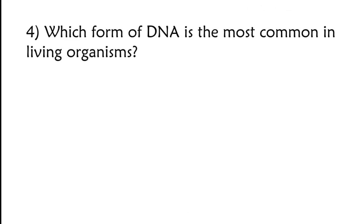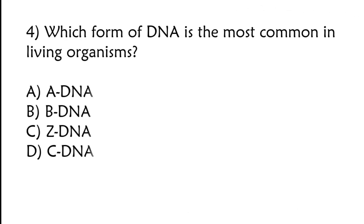Which form of DNA is the most common in living organisms? A-DNA, B-DNA, Z-DNA, C-DNA? Correct answer is option B, B-DNA.